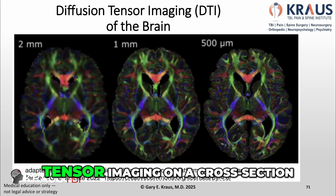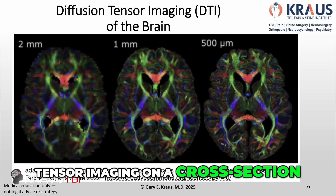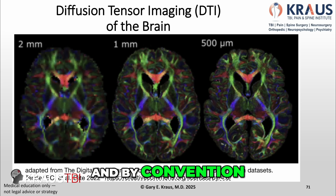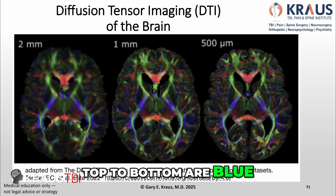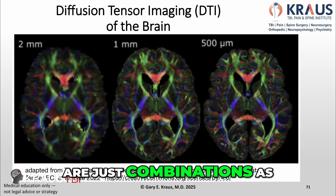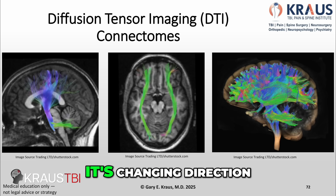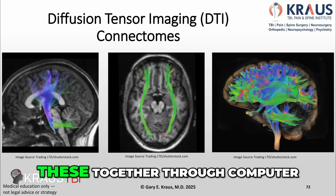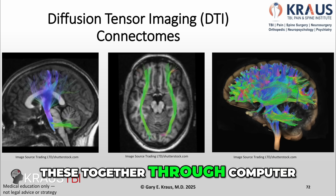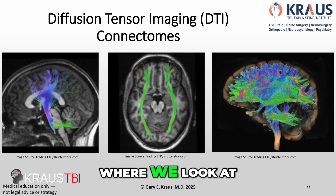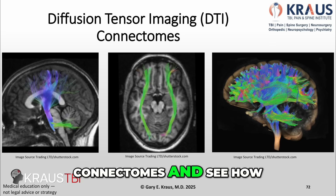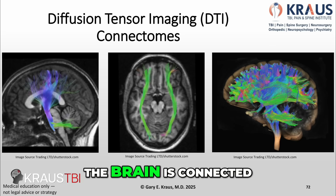This is a typical tensor imaging on a cross section. By convention, any fibers going right to left are red, front to back are green, and top to bottom are blue. Any other colors are combinations as fibers change direction. When we put these together through computer processing, we can create tractograms, where we look at connectomes and see how the brain is connected.